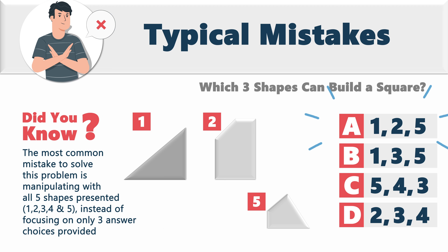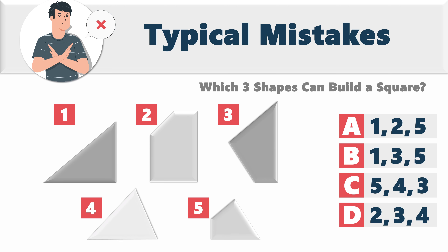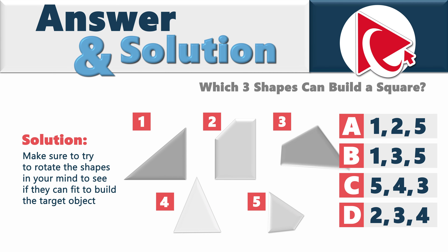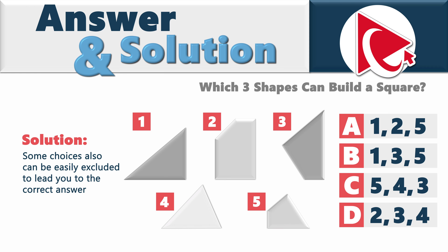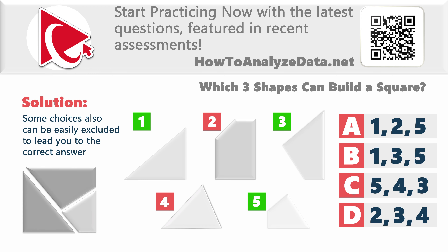Take a look at choice A — shapes one, two, and five. Can you really form a square with these? Look at choices C and D as well. Another common mistake is forgetting that shapes can be rotated. Make sure to try rotating shapes in your mind to see if they fit. To solve this problem, you need to select shapes one, three, and five, rotate them, and build a square. The correct answer is choice B: one, three, and five.